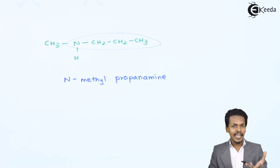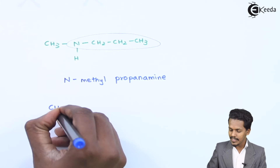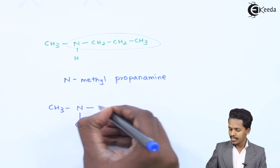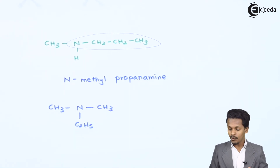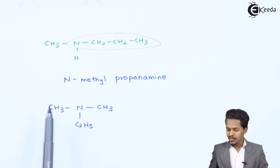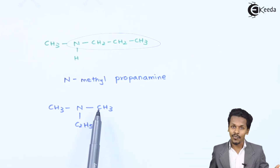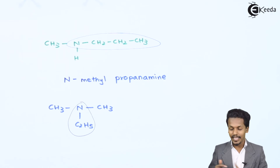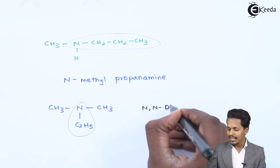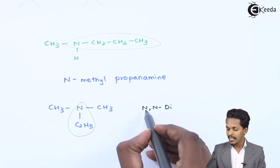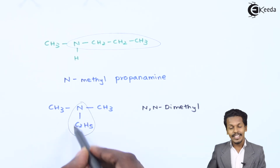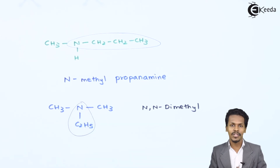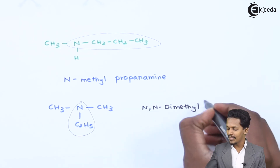Now suppose we have to give a name to a tertiary alkyl amine. For example, consider CH3, C2H5, and CH3 all attached to nitrogen. Among these, we consider the one with the longest chain: the two methyl groups have only one carbon atom each, but the ethyl group has two carbon atoms, so ethyl is the parent chain and the two methyl groups are substituents. The suffix 'di' is used because there are two similar alkyl groups, so the name is N,N-dimethylethanamine.